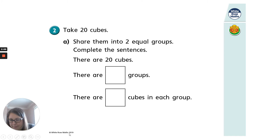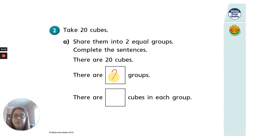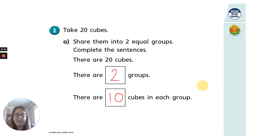So if I put my pen on I can show you the answers. We know that there are two groups, so that means 20 cubes shared between two is 10. Well done if you said that.